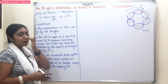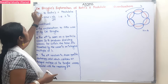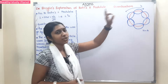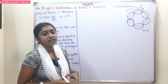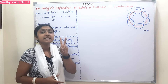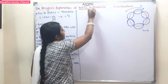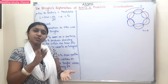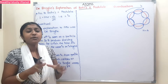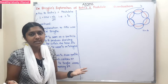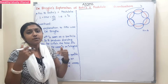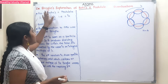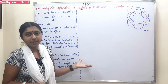The first topic is de Broglie's Explanation of Bohr's Second Postulate of Quantization. In Bohr's Atomic Model, we have three major postulates. The second postulate — this second postulate has a proper explanation. If we are doing experiments, we can tell the results because there is a detailed explanation. This explanation is from de Broglie, who is a scientist.